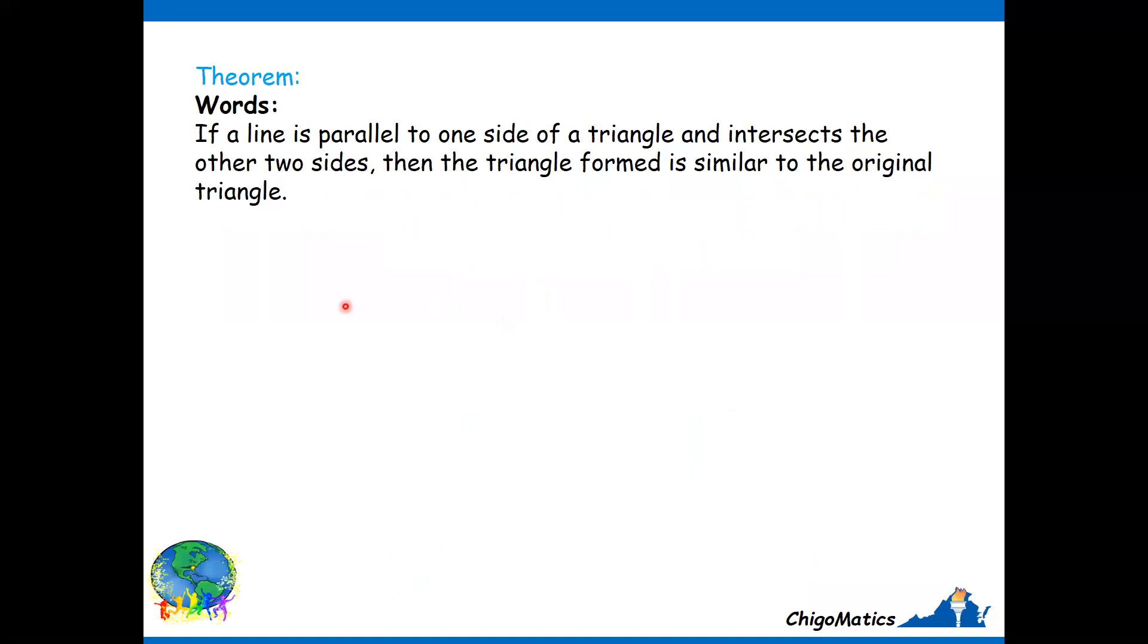If a line is parallel to one side of the triangle and intersects the other two sides, then the triangle formed is similar to the original triangle. The model is the one we have here.